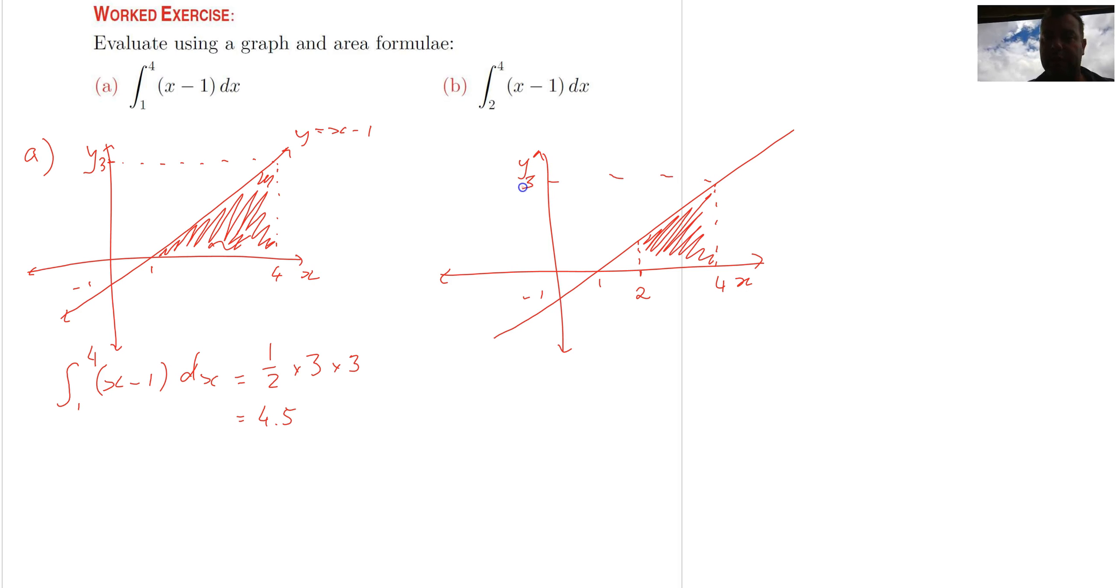That's going to be there at 3, that's going to be there at 1. Okay, now I've got a trapezium. So the area of a trapezium is the average of the parallel sides multiplied by the distance between them.